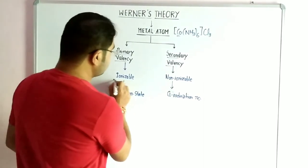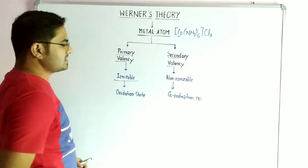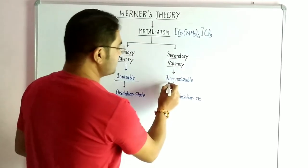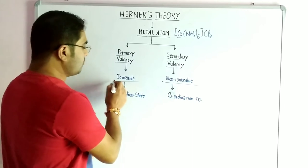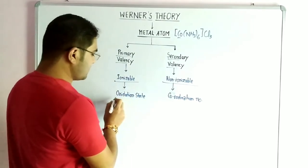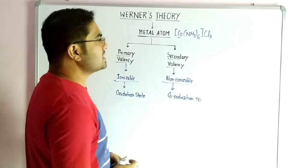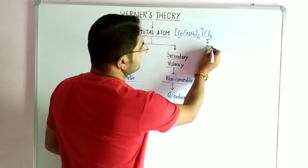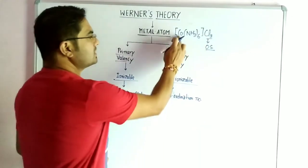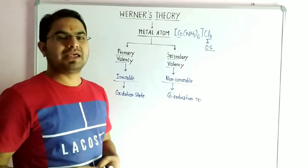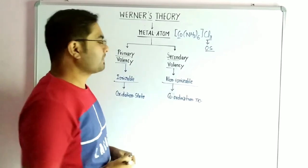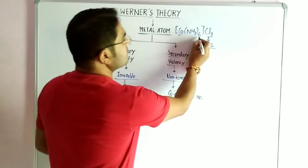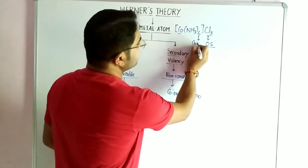Primary valency is ionisable — it gives ions in the form of negative ions. Secondary valency is non-ionisable. In modern terminology, we use the term oxidation state. For this complex, the oxidation state is determined by Cl3. The secondary valency is non-ionisable and directly gives the coordination number. The number of ligands gives the coordination number.